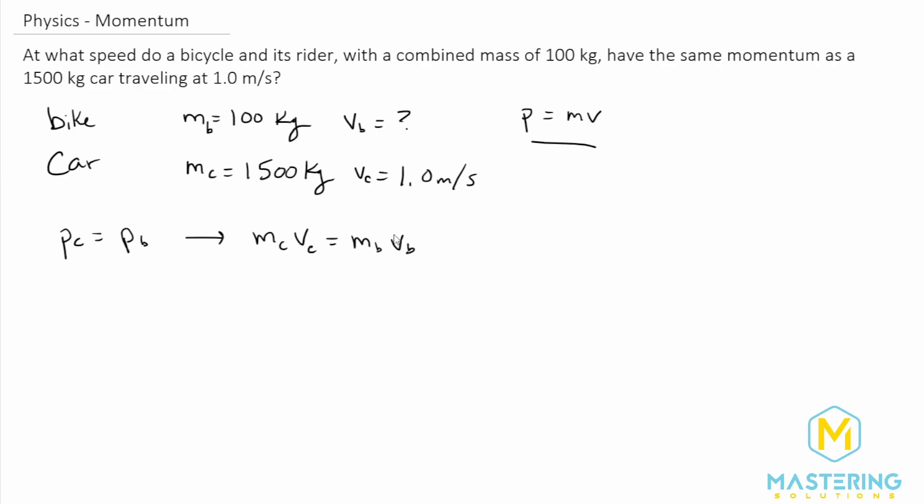So we know that we want to solve for the velocity of the bike. Let's go ahead and solve for that. The velocity of the bike is going to be equal, if we divide by both sides of the equation, to the mass of the car divided by the mass of the bike and the rider times the velocity of the car.